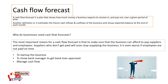Now let's move on to what a cash flow forecast is. A cash flow forecast is a plan that shows how much money a business expects to receive or pay out over a period of time. Another definition: it estimates the future cash inflows and outflows of a business and shows the expected balance at the end of each month. For a cash flow forecast to work, you need to know both inflows and outflows.